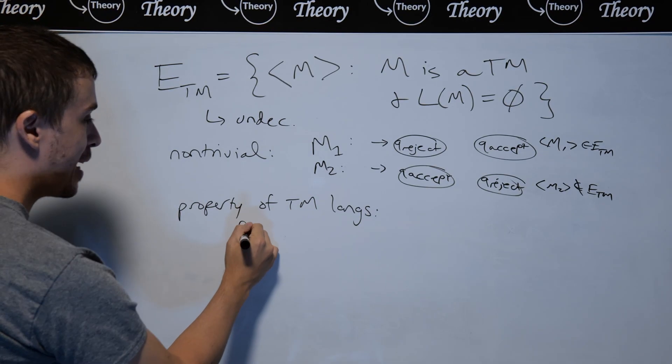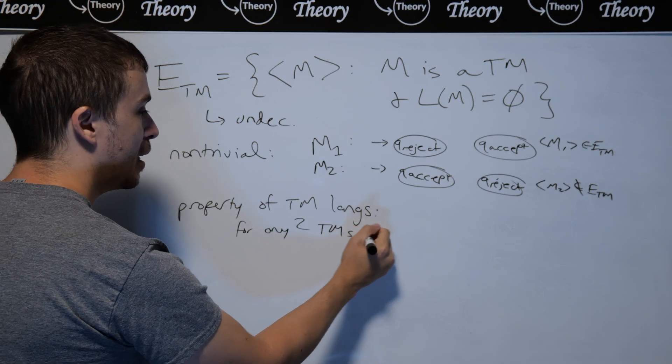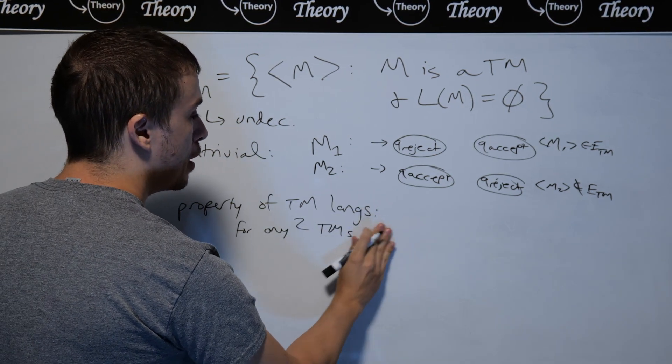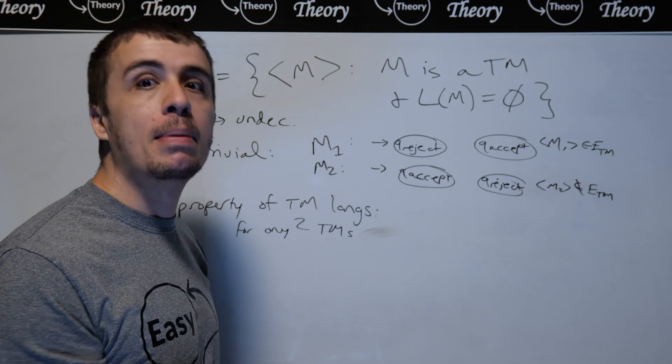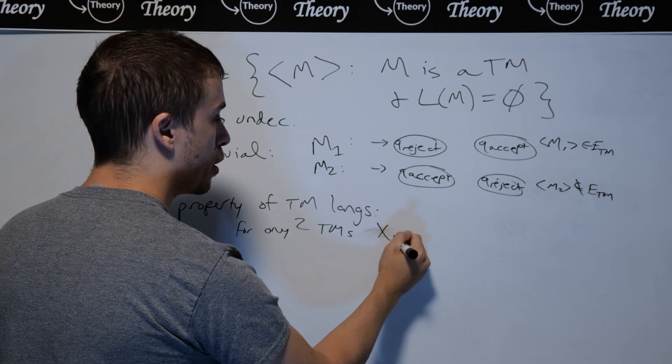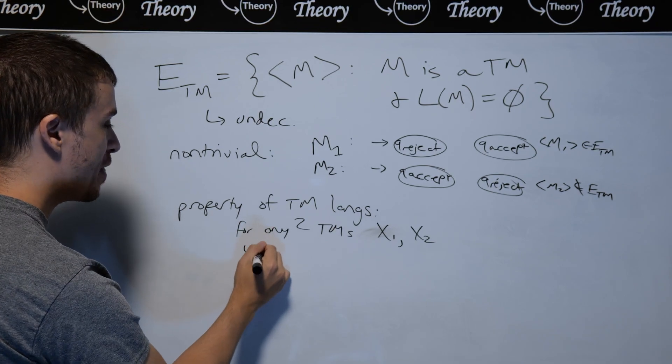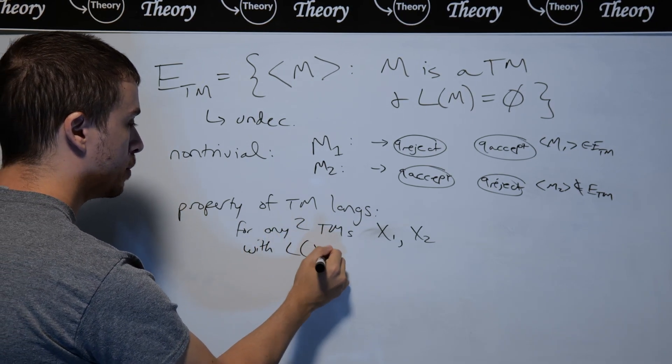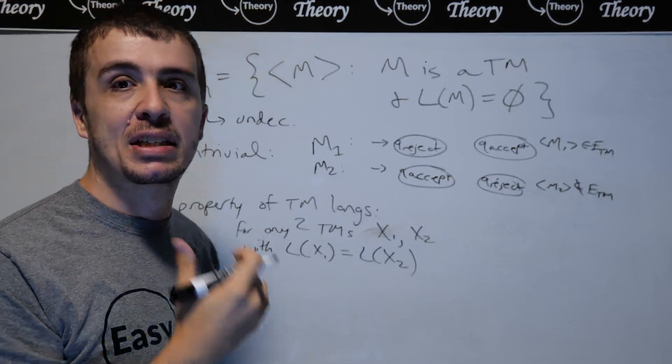So this says that for any two Turing machines, so any two Turing machines, I'm going to call them... Normally, when I used to teach this, I'd call them M1 and M2. I'm going to call them different because I used M1 and M2 upstairs. So I'm going to call them X1, X2. So these are any two Turing machines with identically the same language. So I'm going to assume that they have the exact same language.